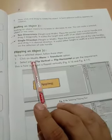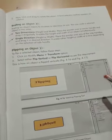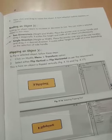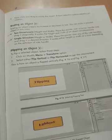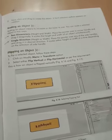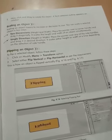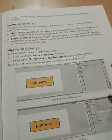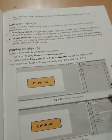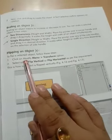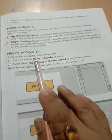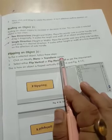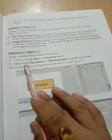Flipping an object — you can flip or mirror an object. To flip, first click on the Modify menu, where you will find the transformation option. From there you can select vertical or horizontal flip.